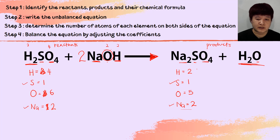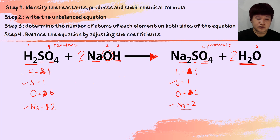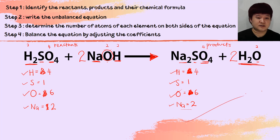Since hydrogen and oxygen are not yet balanced, and water holds both hydrogen and oxygen, we use water to balance. I need 4 hydrogen on the product. I put a coefficient of 2 in front of H₂O. Hydrogen becomes 2×2=4, now balanced. Oxygen in the product becomes 4 (from Na₂SO₄) + 2 (from 2×H₂O) = 6. Now comparing: hydrogen 4=4, sulfur 1=1, oxygen 6=6, sodium 2=2. The chemical equation is now balanced.